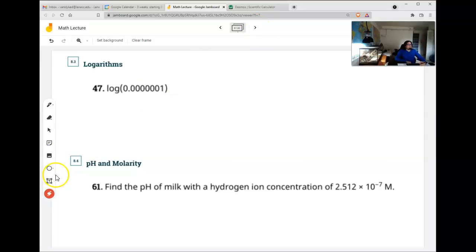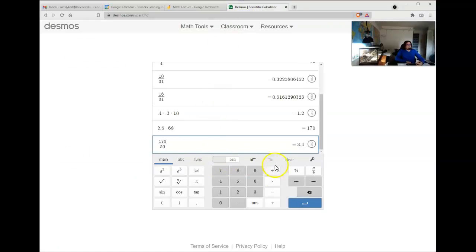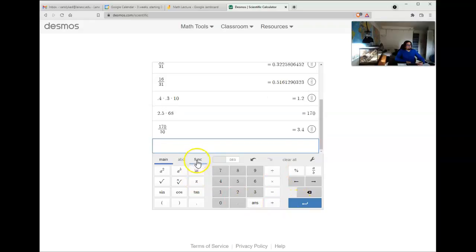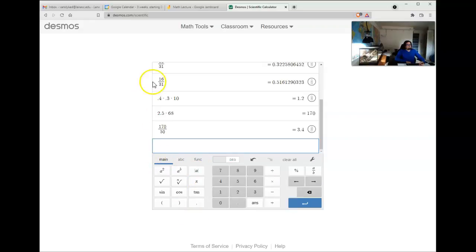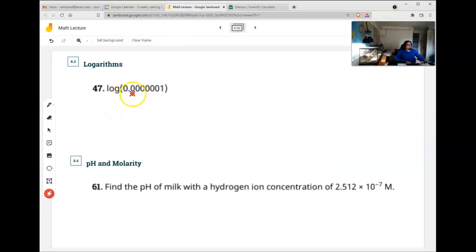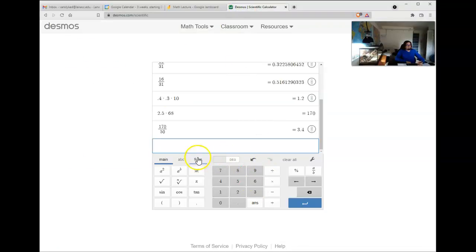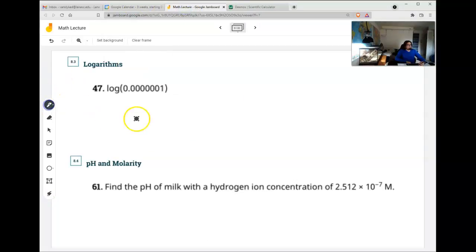Lastly, we had logarithms. This is just a calculator exercise. Unfortunately, the Desmos calculator hides logarithms under the function tab there. So that's where there's logarithms. So this is just a calculator problem. How many zeros? One, two, three, four, five, six zeros, and a one after the decimal place. So logarithm, back to main. One, two, three, four, five, six, one. There we go. Negative seven is the answer. That's all you have to do.